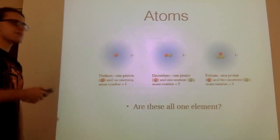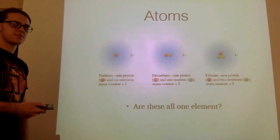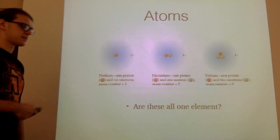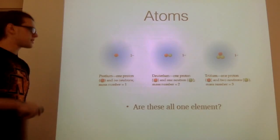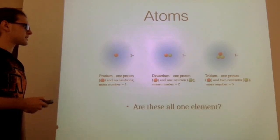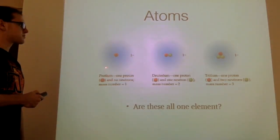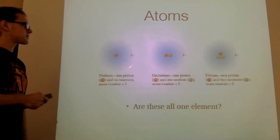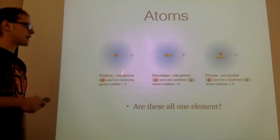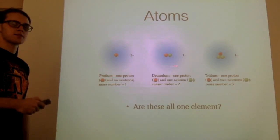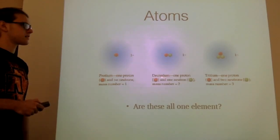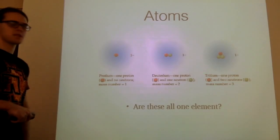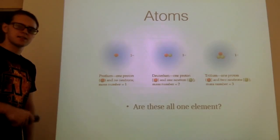So these are all the same element, but how can that be? Protium, hydrogen as this is commonly called, is the main one. So we say hydrogen has two isotopes, deuterium and tritium. So what exactly is an isotope?